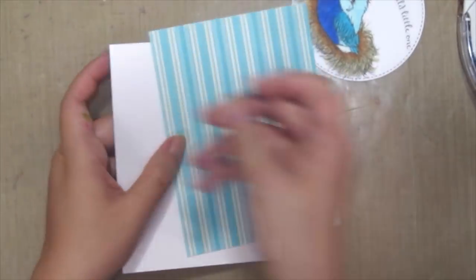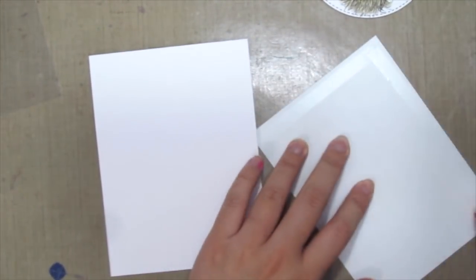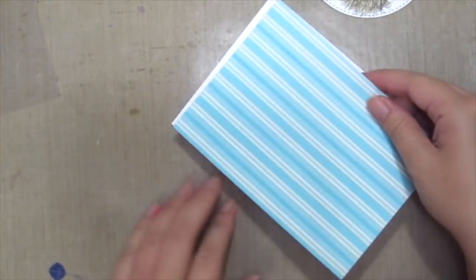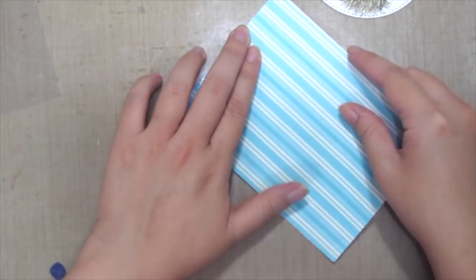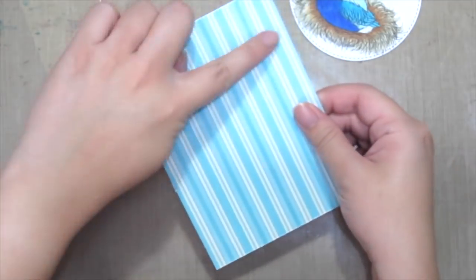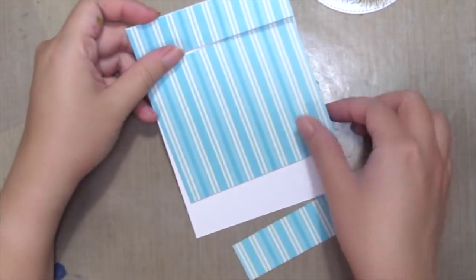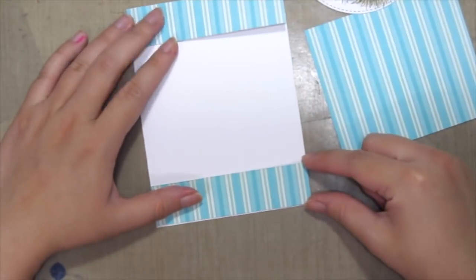I've prepared a card base and patterned paper and I'm just adhering the patterned paper to my card front. Then I'm going to slice it off. Here's what it looks like after I sliced it.